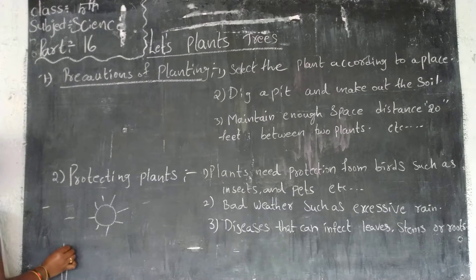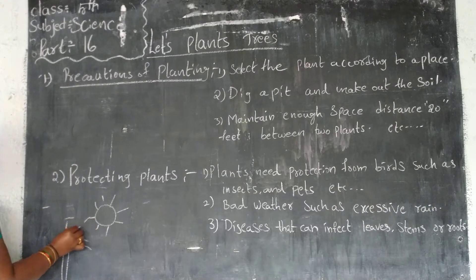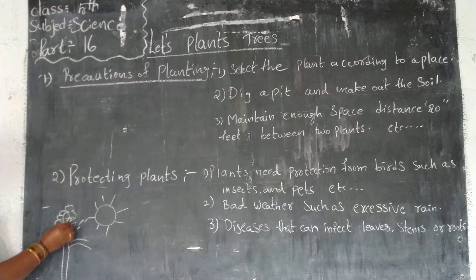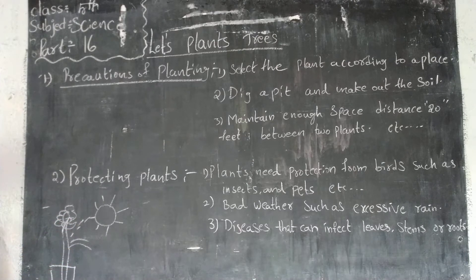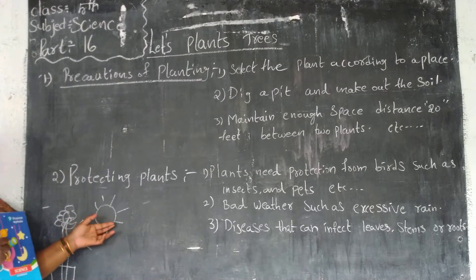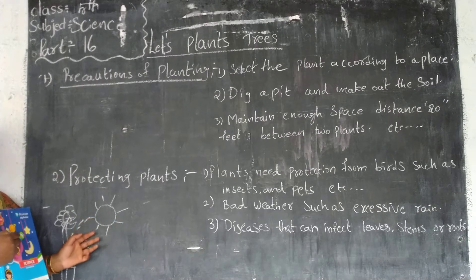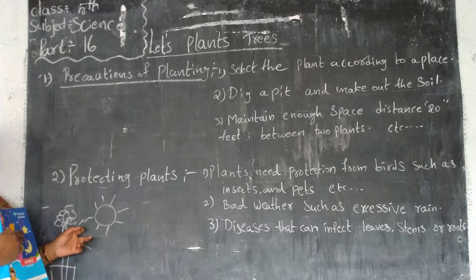The plant will get sufficient sunlight. In the presence of air, water, and sunlight it is producing food.